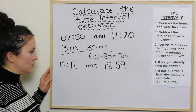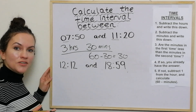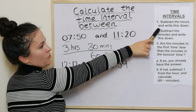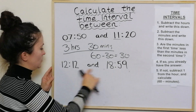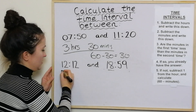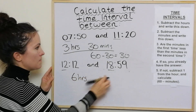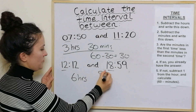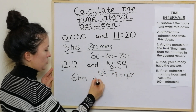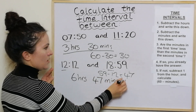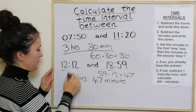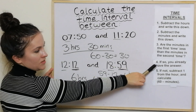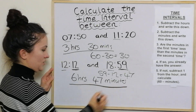This one imagines a train going from Edinburgh to London — again, not based on accurate times. We subtract the hours: 18 take away 12 is 6 hours. Then we subtract the minutes: 59 take away 12 is 47. Are the minutes in the first time less than the minutes in the second time? Yes, because 12 is less than 59. So we already have the answer: 6 hours and 47 minutes.